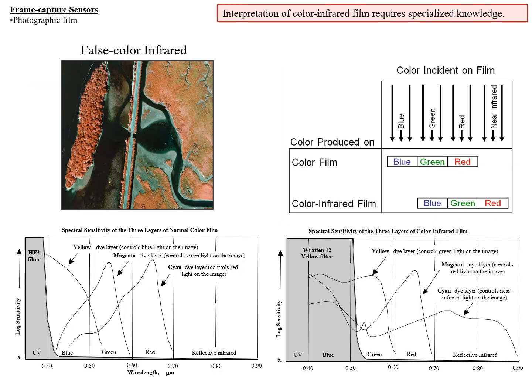With false color infrared, looking at the figure in the upper right, we see four colors incident on the film: blue light, green light, red light, and near-infrared light. On normal color film, blue is recorded as blue, green as green, and red as red — giving true color. Color infrared film is set up so that green light is recorded as blue, red light is recorded as green, and near-infrared light is recorded as red. The first thing you notice with a false color infrared image is that vegetation shows up as red, because vegetation is very bright in the near-infrared.